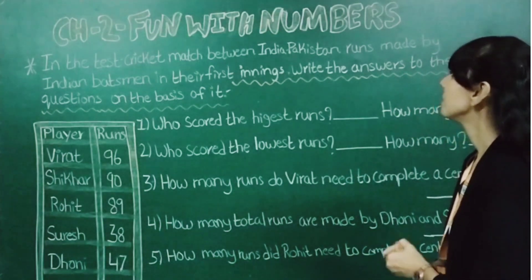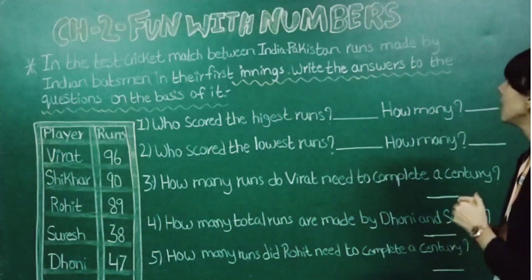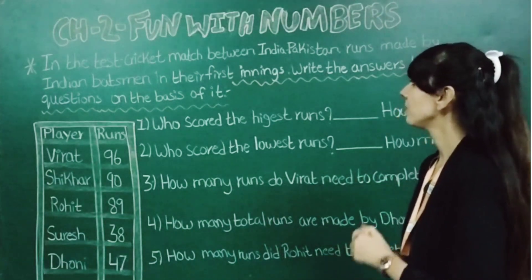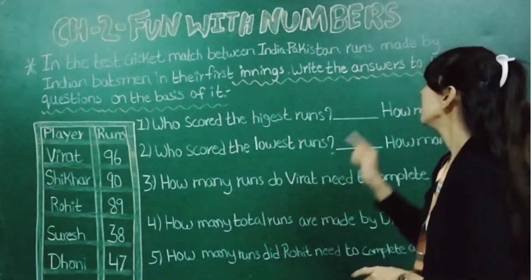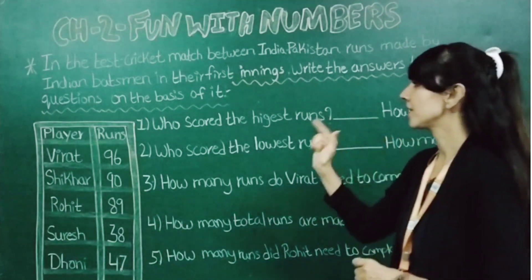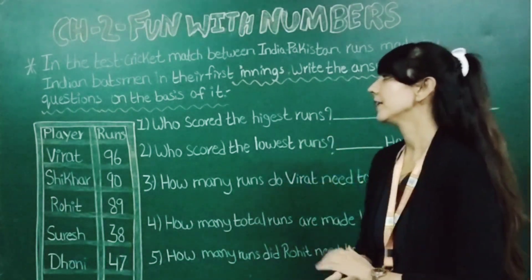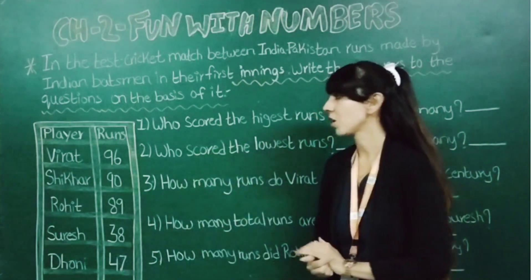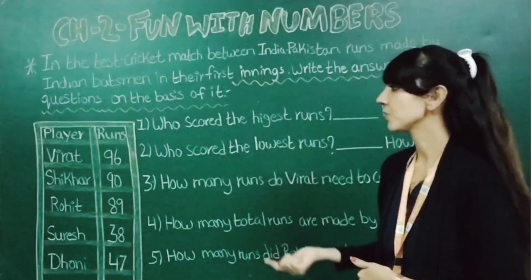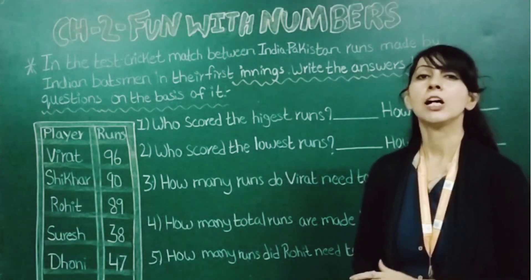In a test cricket match between India and Pakistan, runs made by Indian batsmen in their first innings — write the answers to the questions on the basis of it. Now here you can see information is already given about the players and the runs they scored.